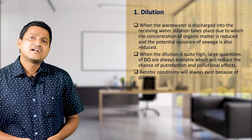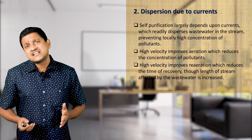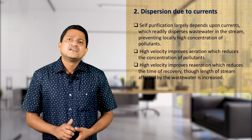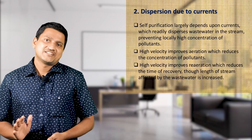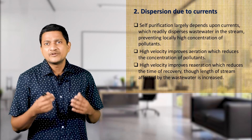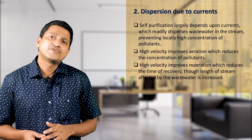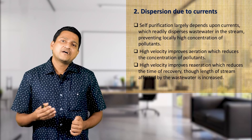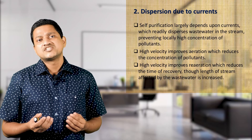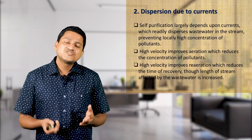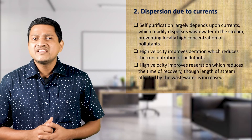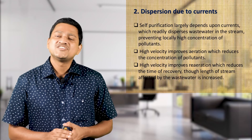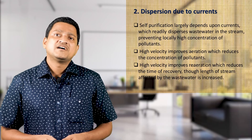The second action is dispersion due to currents. Self-purification largely depends on currents, which readily disperse wastewater in the stream, preventing locally high concentrations of pollutants. High velocity improves aeration, which increases dissolved oxygen and the rate of degradation, thus decreasing pollutant concentration. High velocity also improves re-aeration, reducing the time of recovery, though the length of stream affected by wastewater is increased.